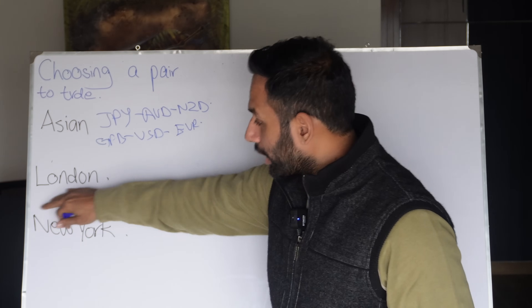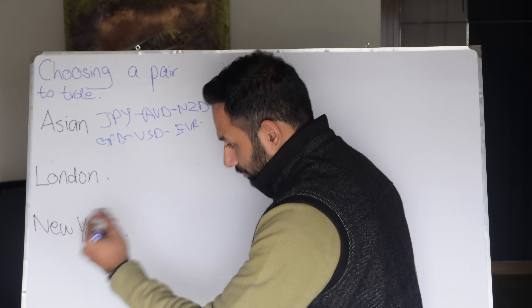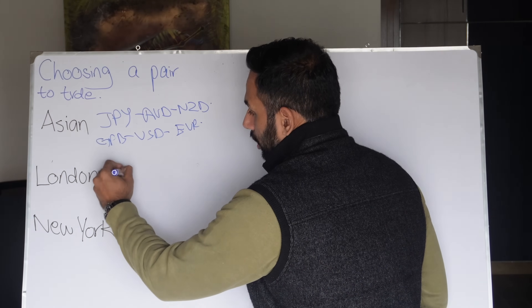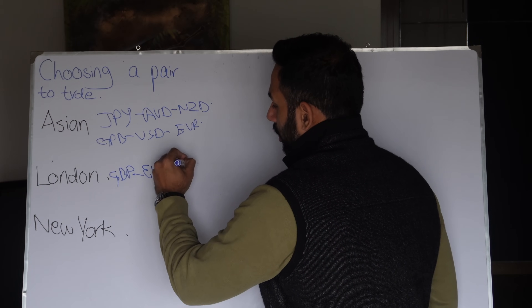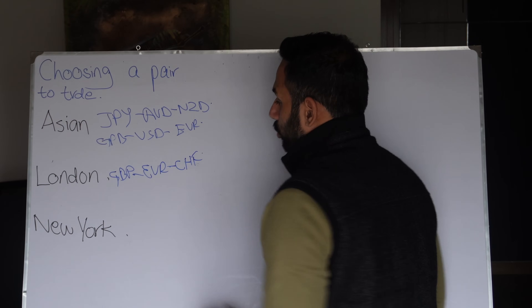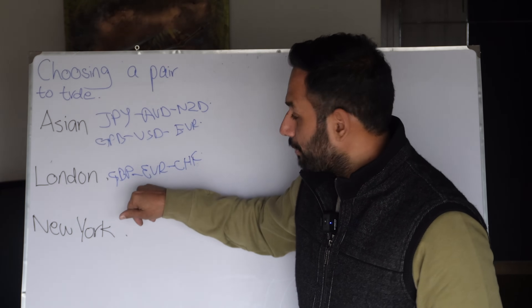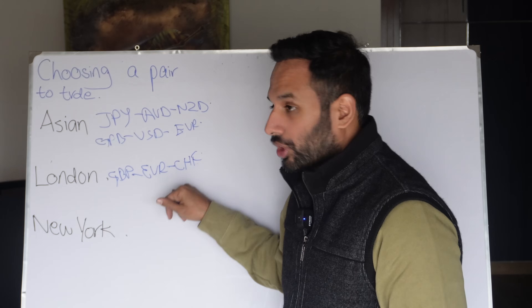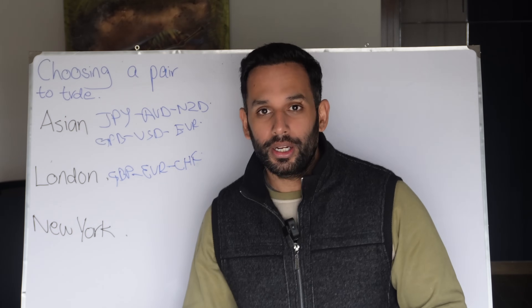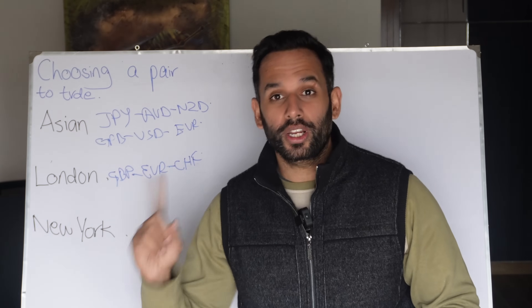In the same way, when we look at the London session, the pairs that are open at this time are your pound, your euro, your Swiss franc, and so on. But the most traded currencies in the London session are the pound and euro. So pairs like pound yen and pound euro are moving. The key point is: whenever you're trying to choose a currency pair, make sure that in that session the pair is only influenced by just one currency.